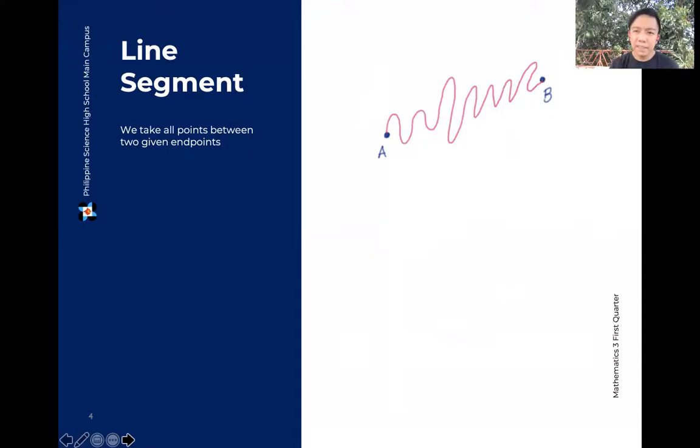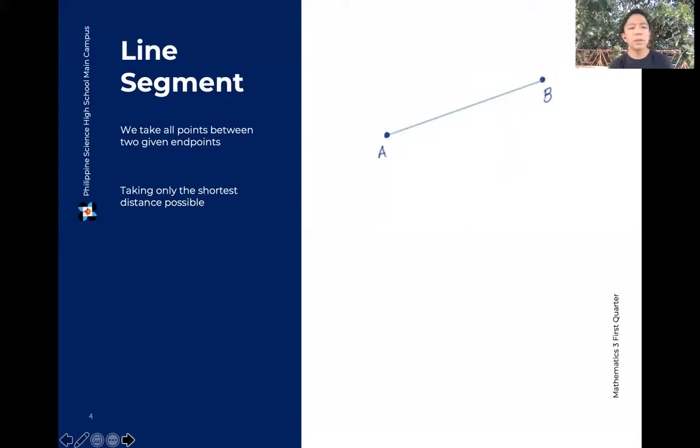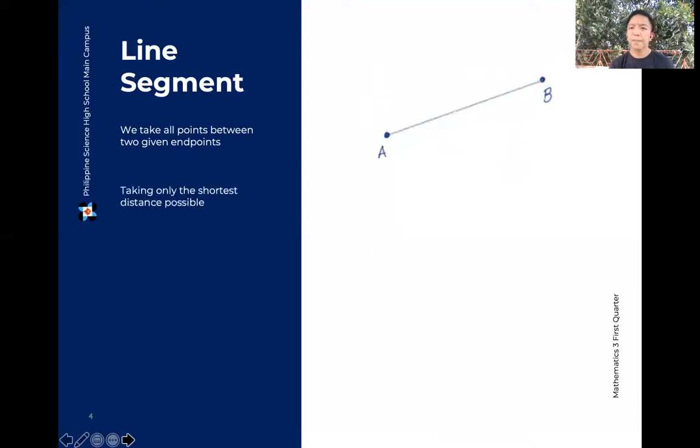Well, in a plane, in a Cartesian plane, hindi. Kasi we want to add yung condition na dapat it's the shortest distance possible between those two points. Yung all the points in the shortest distance possible. So ayaw natin ito. Ito yung tatanggapin natin as a line segment.